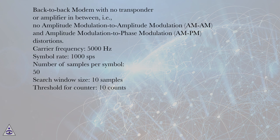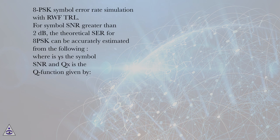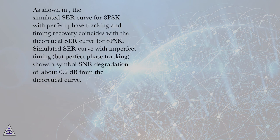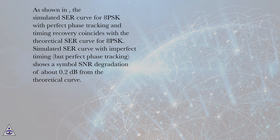APSK Symbol Error Rate Simulation with RWF TRL. For symbol SNR greater than 2 dB, the theoretical SAR for 8PSK can be accurately estimated using the formula involving Γ_S (the symbol SNR) and Q(x) (the Q function). As shown, the simulated SAR curve for 8PSK with perfect phase tracking and timing recovery coincides with the theoretical SAR curve. The simulated SAR curve with imperfect timing but perfect phase tracking shows a symbol SNR degradation of about 0.2 dB from the theoretical curve.